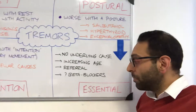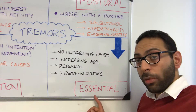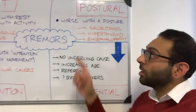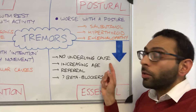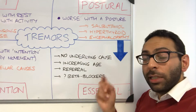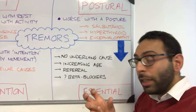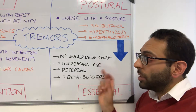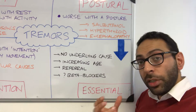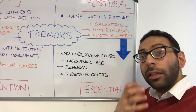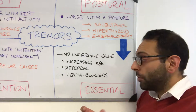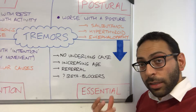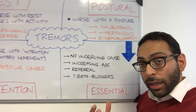Then you have benign essential tremor, often known as familial tremor. It's an example of a postural tremor but we don't know exactly why it happens — there's thought to be some genetic component but it's not fully understood. It tends to worsen with age. You'd refer these to neurology to rule out other causes, and beta blockers tend to be one of the first-line treatments tried.